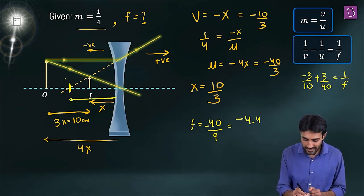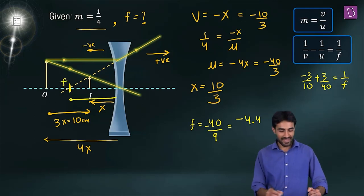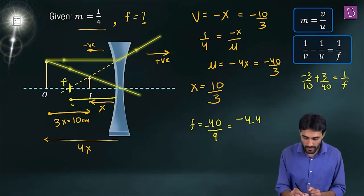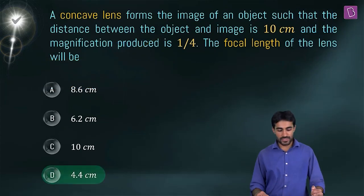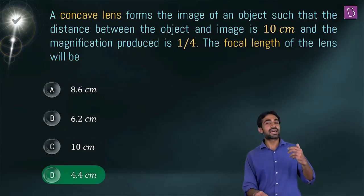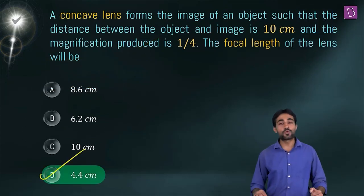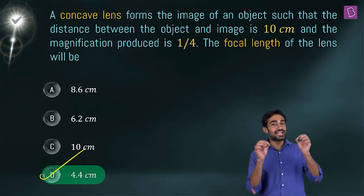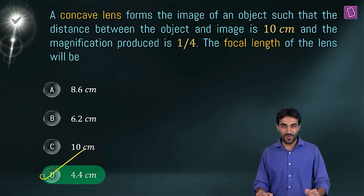The focal length comes out to be approximately −4.4 cm. Looking at the options, option D — 4.4 cm — is the right answer for this question.